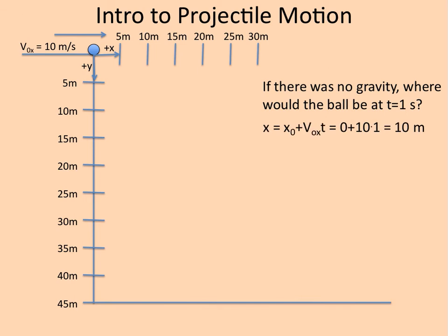Its x motion is constant velocity. So 10 meters per second going off the edge, it's just going to stay 10. So after one second, it's gone 10 meters.